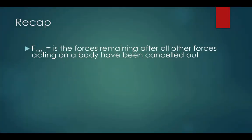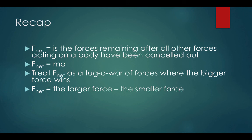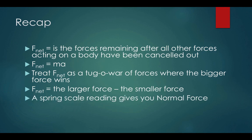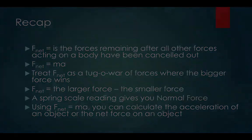Fnet is the forces remaining after all other forces acting on a body have been cancelled out. Fnet equals mass times acceleration. Treat Fnet as a tug-of-war where the bigger force wins: Fnet equals the larger force minus the smaller force. A spring scale reading gives you normal force. Using Fnet equals ma, you can calculate the acceleration of an object or the net force acting on an object.